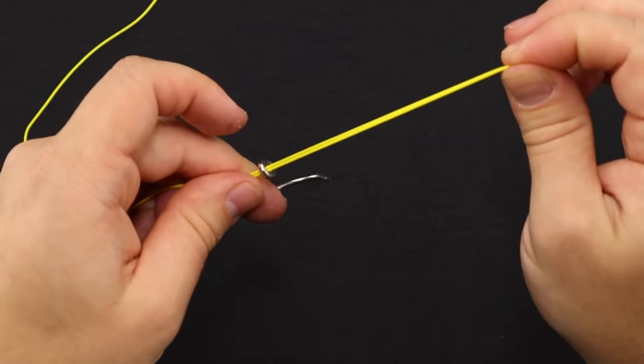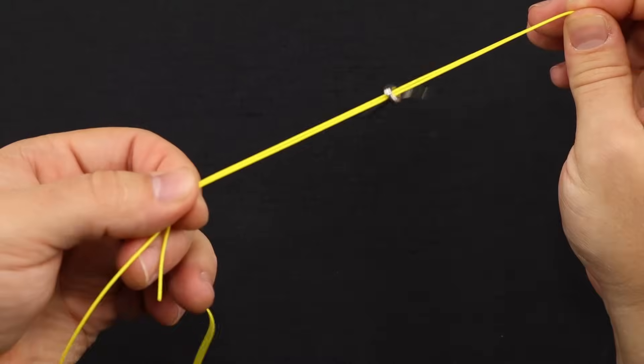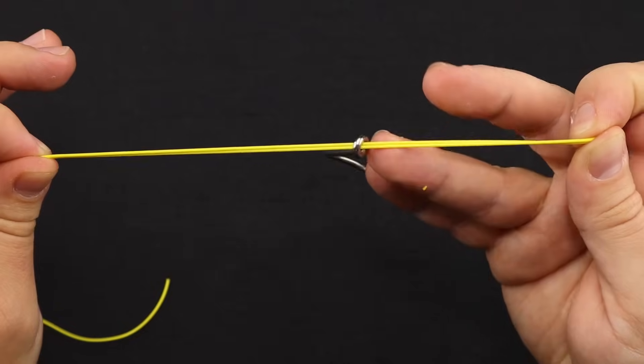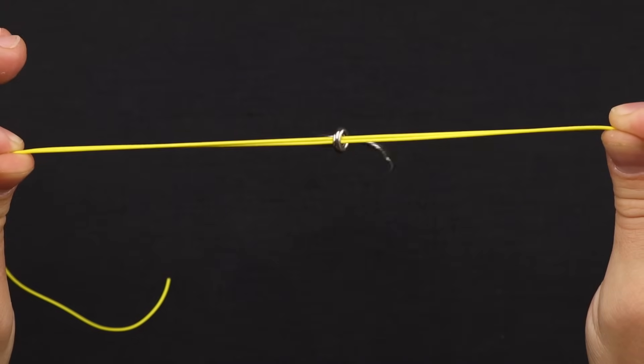Now I like to just hold the right loop with my right hand, and then right where the tag end meets the main, go ahead and pinch that with my left. And I try to get that hook to be centered right on the line.